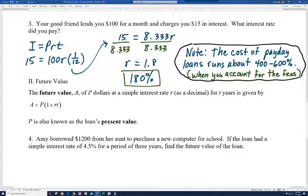It says the future value A of P dollars at a simple interest rate R, again written as a decimal, for T years is given by the formula A equals P times the quantity 1 plus R times T. So notice A is the future value. P is called the present value.